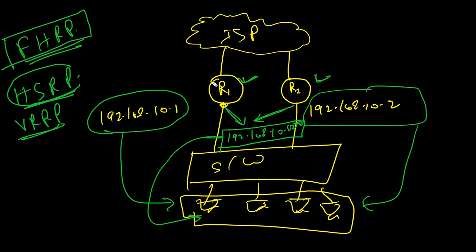When R1 goes down, traffic will automatically move through R2. And when R2 goes down, all traffic will move through R1. FHRP is a group of protocols that provides redundancy for the first hop — or you can say, redundancy for the default gateway.